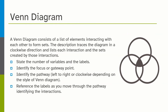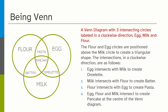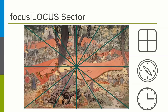Venn diagrams consist of a list of elements interacting with each other. You need to state the number of variables and labels, identify the focus point, identify the pathway — left to right or clockwise, generally clockwise for three-circle Venn diagrams — and then reference the labels as you move through. For example: 'A Venn diagram with three intersecting circles labeled in a clockwise direction: egg, milk, and flour. The flour and egg circles are positioned above the milk circle to create a triangular shape. The intersections in a clockwise direction are: egg intersects with milk to create omelet; milk intersects with flour to create batter; flour intersects with egg to create pasta; and egg, flour, and milk intersect to create pancake at the center of the Venn diagram.'